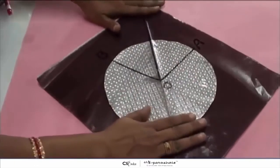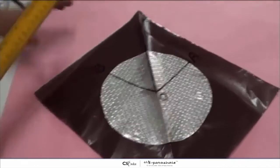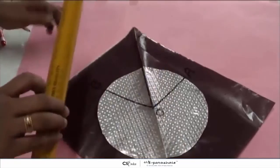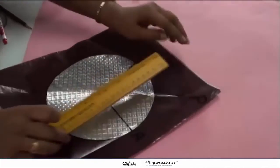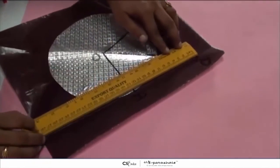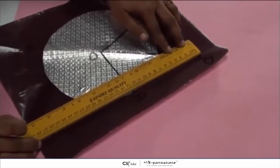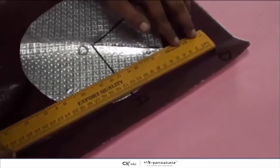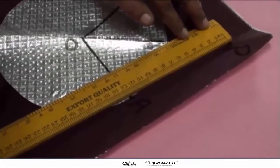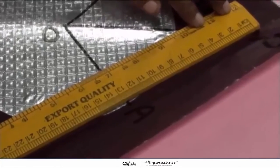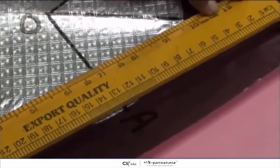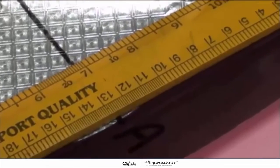Now we will measure the length of PA. So again take your ruler. With the help of a ruler, you measure the length of PA which is equal to 13 cm.